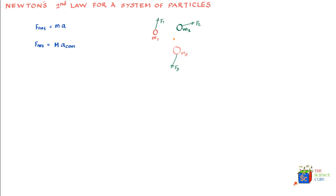Now let's prove that this equation is true for a system of masses. From the last lesson, the center of mass of a system of particles is given as the sum of each mass multiplied by its distance from the origin — from mass 1 times x1, up to mass n times xn — all divided by the sum of the masses, M, where M equals m1 plus m2 plus m3 up to mass n. Cross-multiplying gives M times x_cm equals that sum.